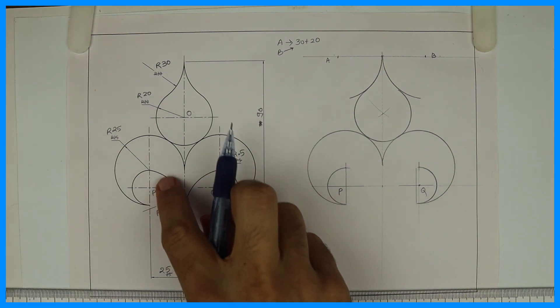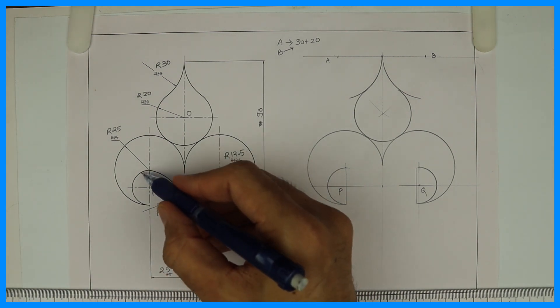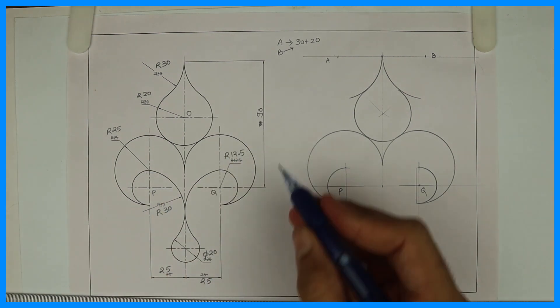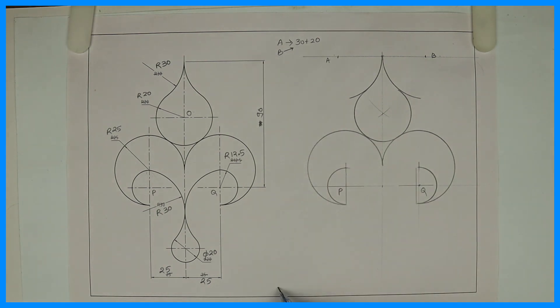This is radius 30, right? This is 12.5, this is 30. So from P you draw 30 minus 12.5 because it is internal, so it would be 17.5. And from here you need to draw a parallel line at 30.